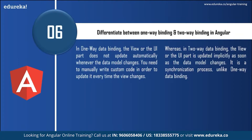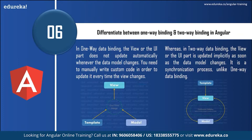Next: differentiate between one-way binding and two-way binding in Angular. In one-way binding, the view or UI part does not update automatically whenever the data model changes — you need to manually write custom code to update it every time the view changes. Whereas in two-way data binding, the view or user interface is updated implicitly as soon as the data model changes. It is a synchronization process, unlike one-way data binding. Describing this with a diagram impresses the interviewer even better.